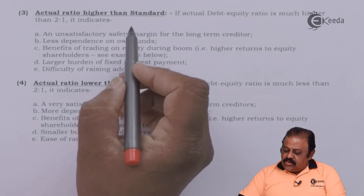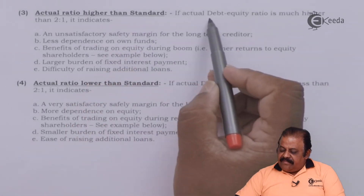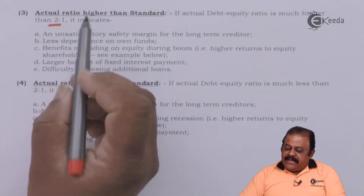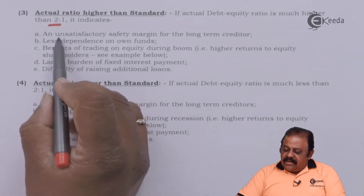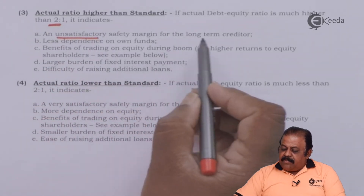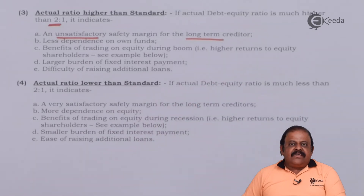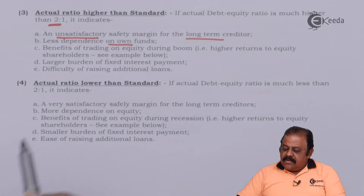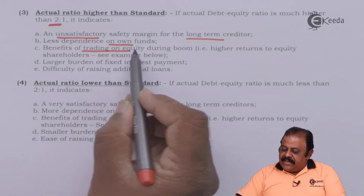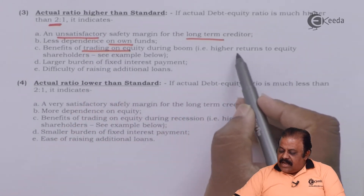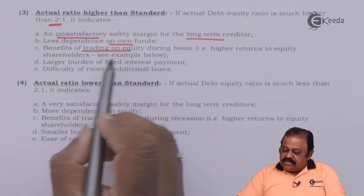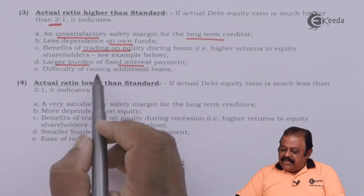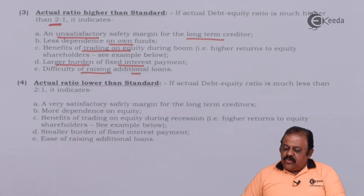If the actual debt equity ratio is much higher than 2 is to 1, it indicates an unsatisfactory safety margin for long-term creditors, less dependence on own funds, benefit of trading on equity during boom (higher return to equity shareholders), but a large burden of fixed interest payment and difficulty of raising additional loans.